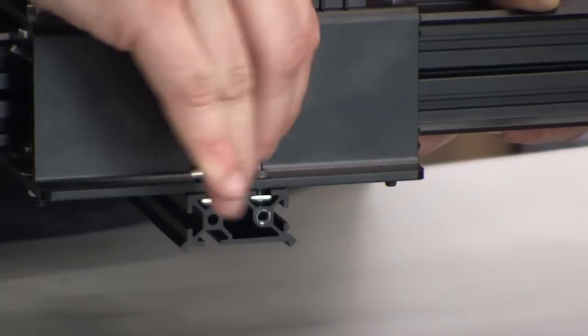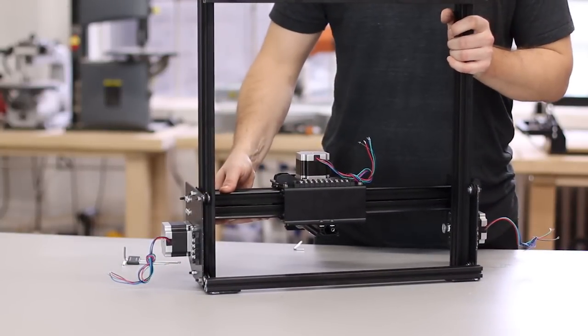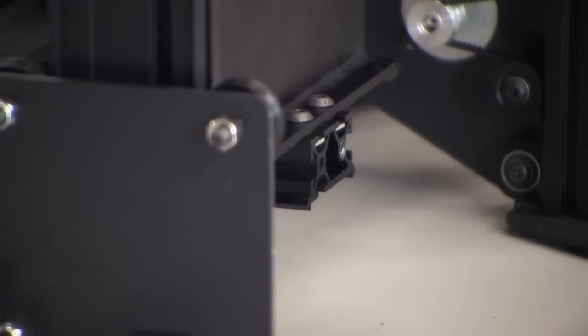You'll want to align the Z-axis with the X-carriage. If you do this correctly, there'll be a small portion of the Z-axis sticking out from the bottom of the X-carriage. This is easy to see in the video right here.